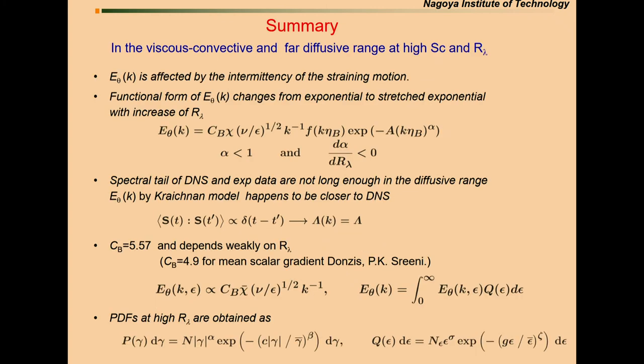Let me summarize. The E_theta is affected by intermittency of the strain motion. The functional form is stretched exponential. And the power is weakly dependent on Reynolds number. The spectral tail obtained by DNS and exponential experiment data are not long enough in the diffusive range. The Kraichnan spectrum happens to be closer to the DNS, my understanding. And probably the Batchelor constant is also dependent, weakly, on the Reynolds number. Thank you very much.